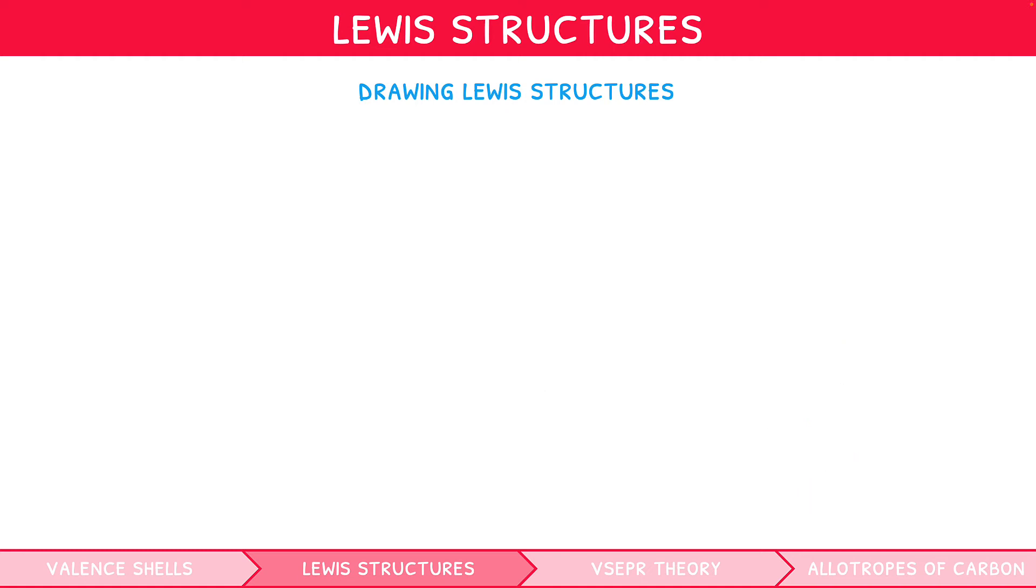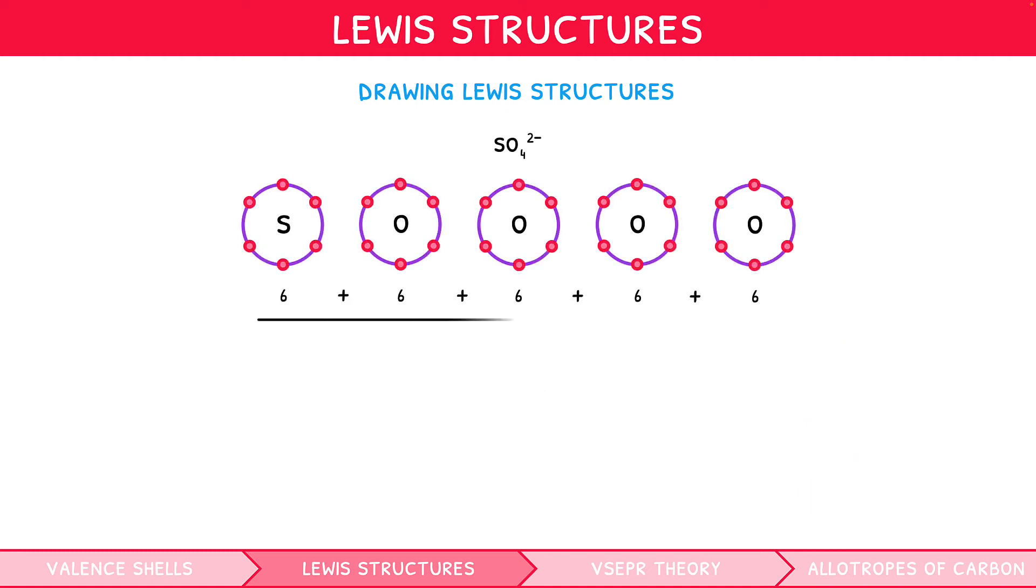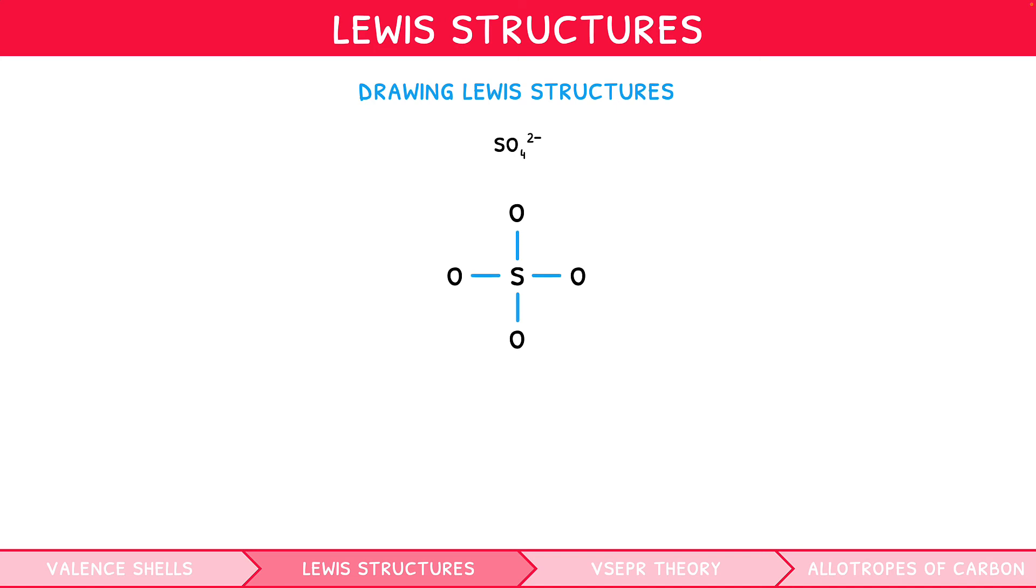Let's use the example of SO4 2-. Adding up the valence electrons, we have 30, but since this is a 2- ion, we say the total is 32. Thus, we have 16 lines to use. Note, a charge of 2+ would cause you to remove 2 from your total. First, we connect sulfur to all 4 oxygens using one line, and fill the octet of the outer oxygens. This leaves no further lines.